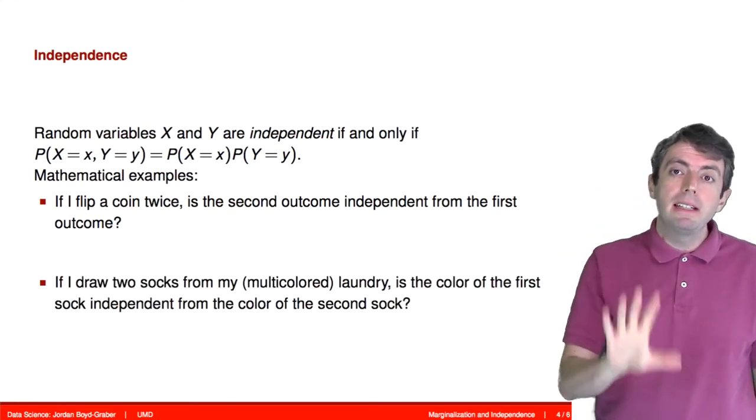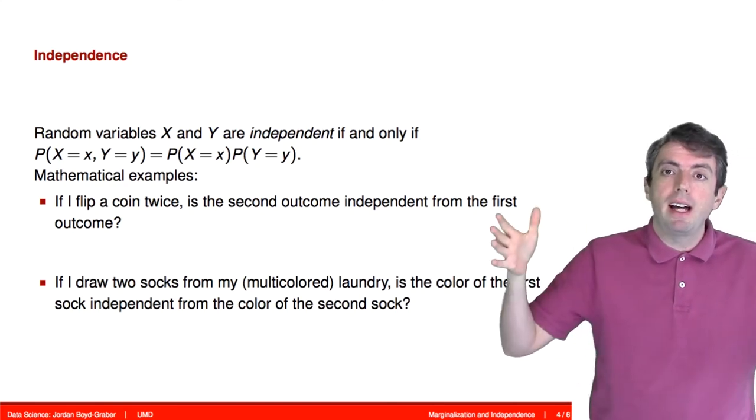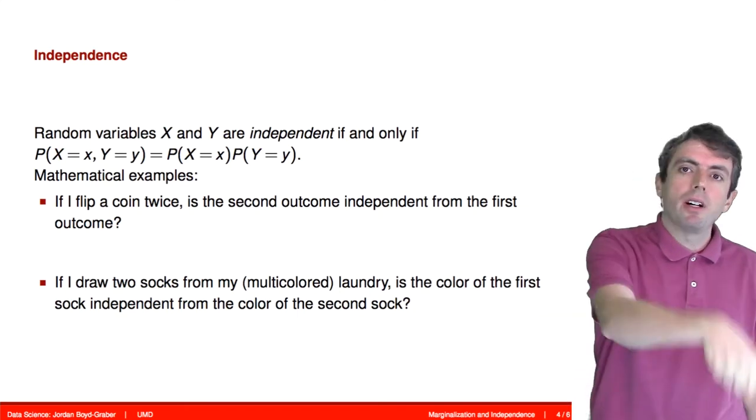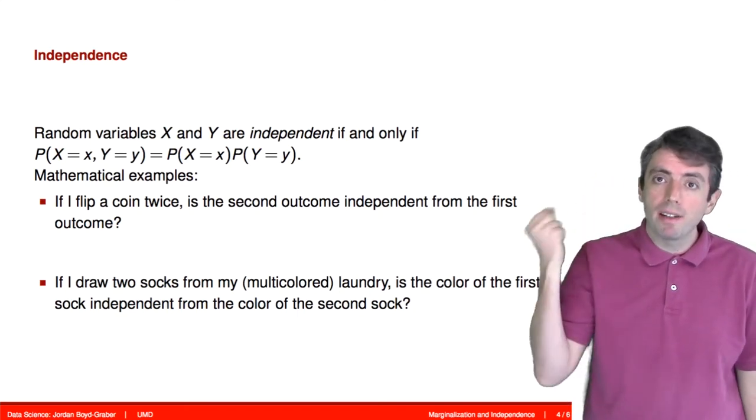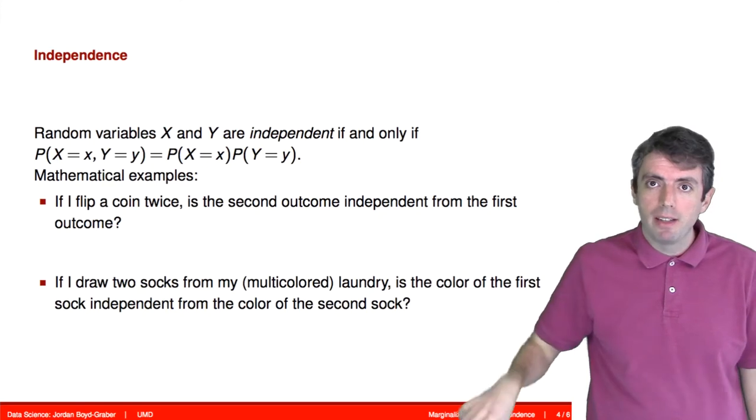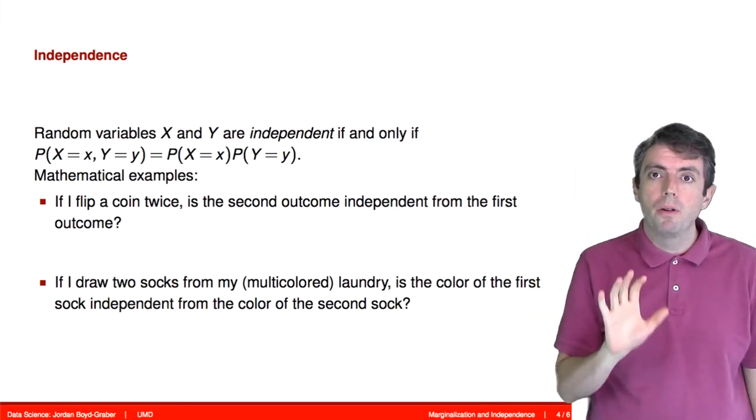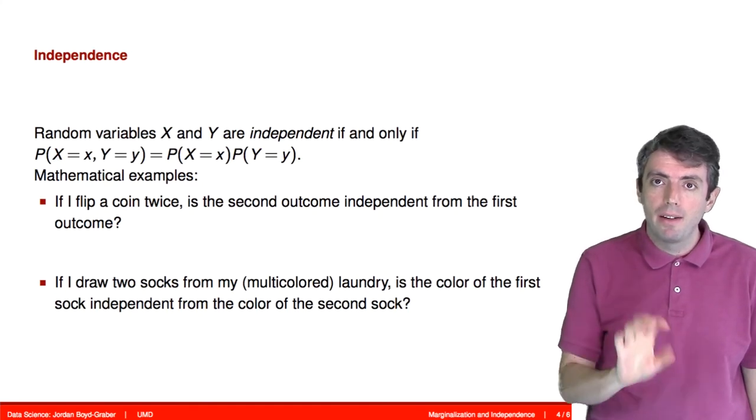But let's take a look at something that isn't independent. So let's say I have a big box of socks and I draw a sock out of it. What color is that sock? And I do that once, I set it aside, and then I draw out another sock. Those two random variables are not independent.